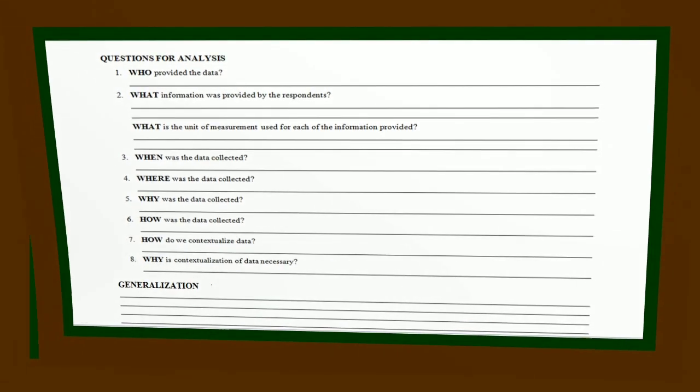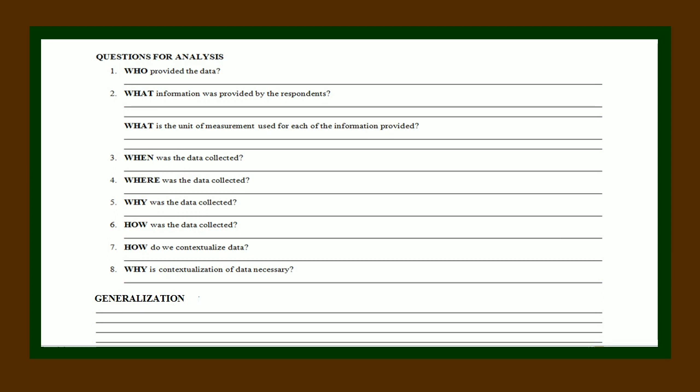Now let us answer these questions: number one, who provided the data? Number two, what information was provided by the respondents, and what is the unit of measurement used for each? Number three, when was the data collected? Number four, where was the data collected? Number five, why was the data collected? Number six, how was the data collected? Number seven, how do we contextualize data? Number eight, why is contextualization of data necessary? Then write the generalization about the data collection activity.